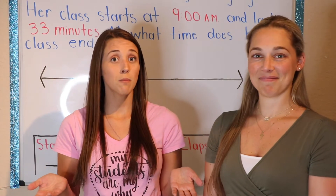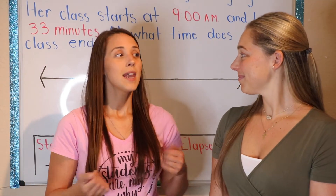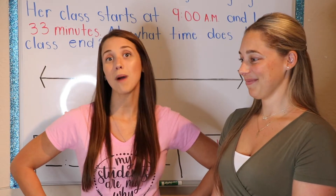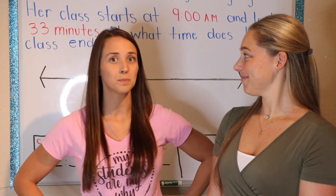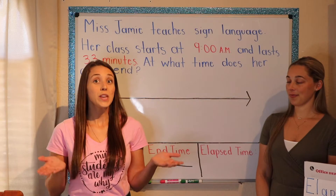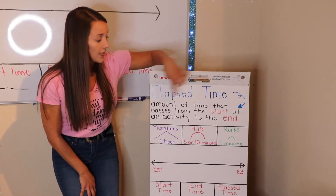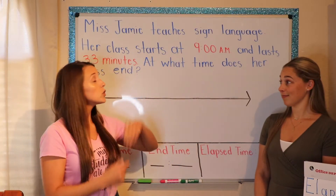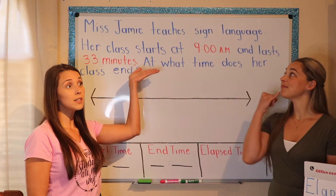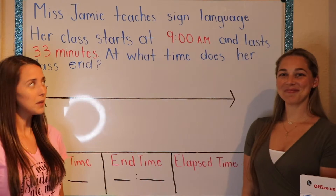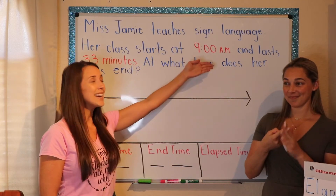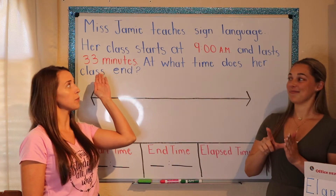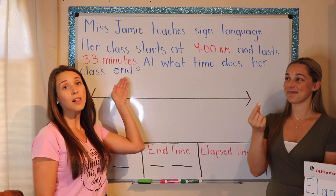Today we are going to be teaching my friends about elapsed time. I'm going to read the problem, and as I'm reading the problem, I think that you could teach my friends a little something about sign language as well. So we know that elapsed time is the amount of time that passes from the start of an activity to the end, but this problem is a little different. Ms. Jamie teaches sign language. Her class starts at 9 a.m., and lasts a total of 33 minutes.